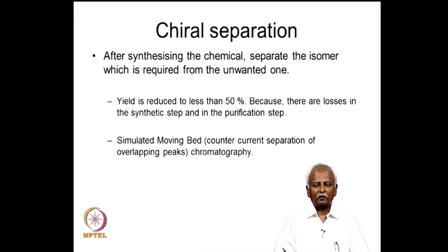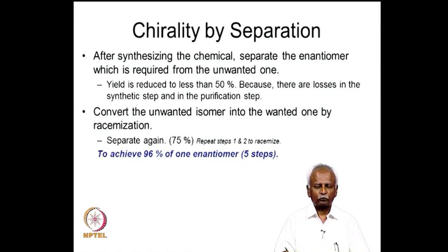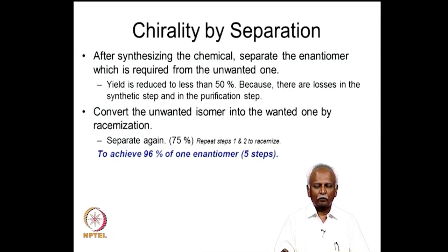Special mention must be made of the simulated moving bed or counter-current separation of molecules on a chromatograph. This type of batch or counter-current separation allows for the pure form of each isomer — even if you make the chiral form in an impure state, you can purify it very well using these special techniques. Chirality by separation, however, not only gives you wastage of the compound but requires more time to obtain the pure form.